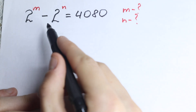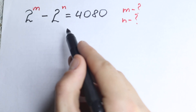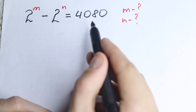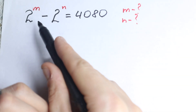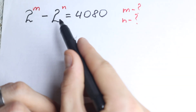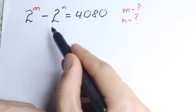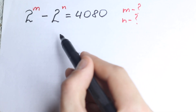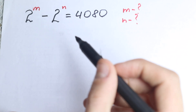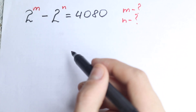We have 2 to the power m minus 2 to the power n equal to 4080. So how can we solve this question? In math we're interested in a proper solution — we cannot just write m equal to some value and n equal to 1. We need to solve it correctly and according to math rules and math properties. So let's try to solve it.